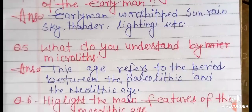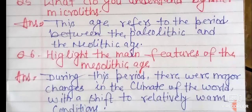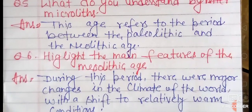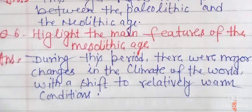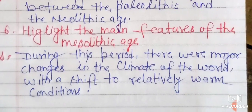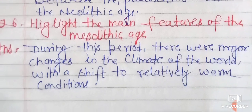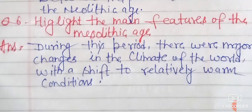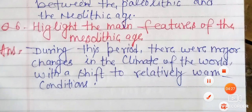Question number 5: What do you understand by microliths? This age refers to the period between the Paleolithic and Neolithic age. Highlight the main feature of the Mesolithic age. During this period, there were major changes in the climate of the world, with a shift to relatively warm conditions.